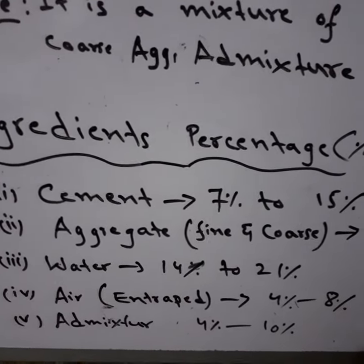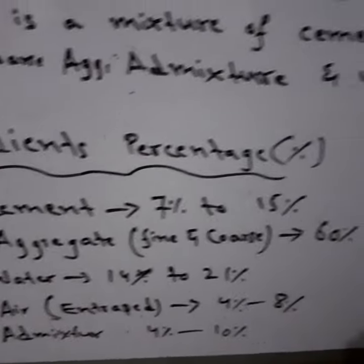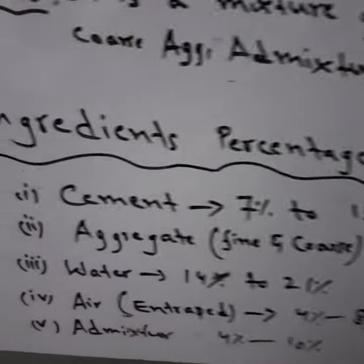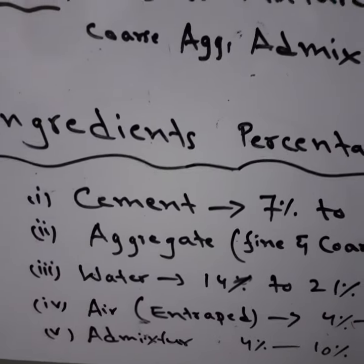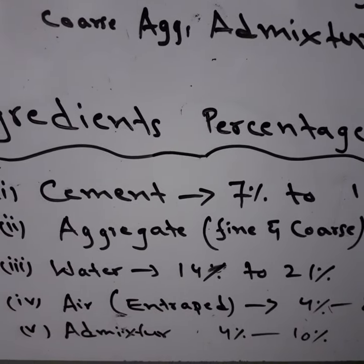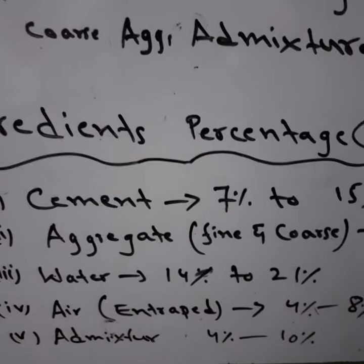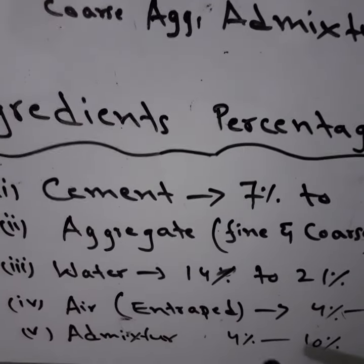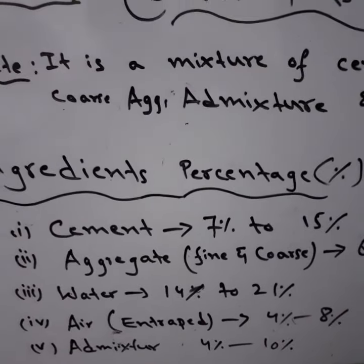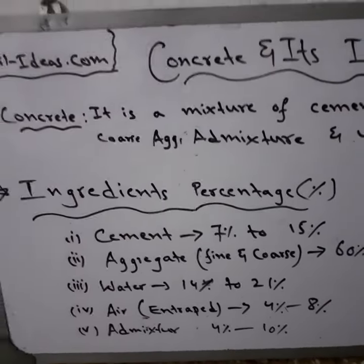Water is from 14 to 21 percent. Entrapped air, which may be entrapped during mixing, is 4 to 8 percent. Admixture is 4 to 10 percent — it depends, as somewhere it is used and somewhere it is not.